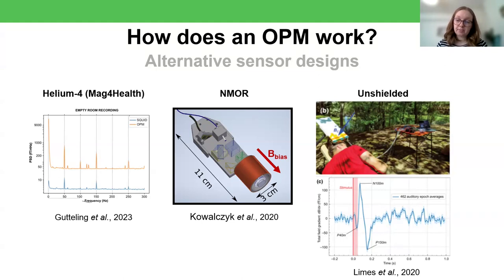And then the final sensor that I've highlighted here is an unshielded one. So this is an auditory recording done with just a single sensor, but completely outside, completely unshielded. So without the magnetically shielded room or the external active magnetic shielding that we talked about previously. It required the participant to be aligned with the Earth's magnetic field, hence the slightly unusual angle of the photo. But I think it's a really exciting direction for the field.